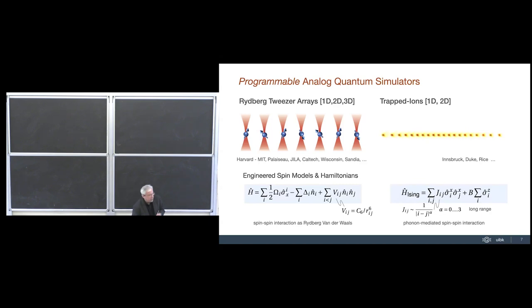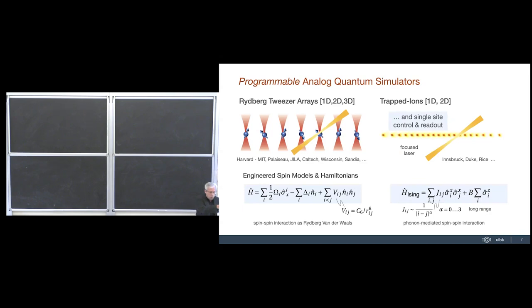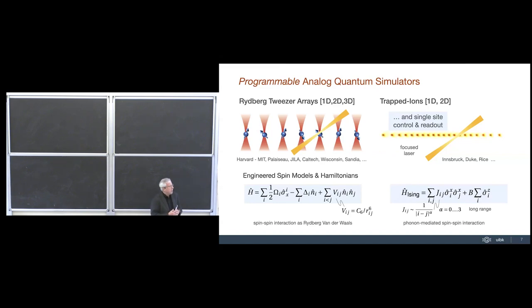We call them programmable simulators because we can add operations — for example, trapped ion experiments allow addressing individual atoms with lasers, doing single-qubit rotations, measurements, and more. This gives you a toolbox with a tunable Ising model as the many-body interaction, plus the ability to manipulate and measure individual spins. You can take your favorite problem in quantum statistical mechanics or condensed matter physics and study it in this engineered context — with systems that are isolated to a high degree.